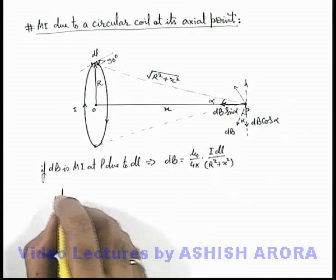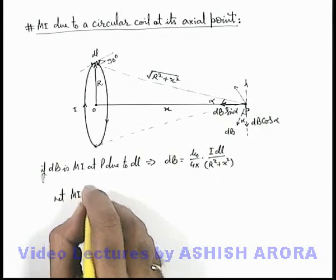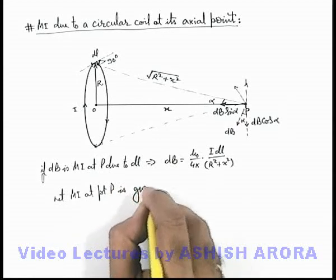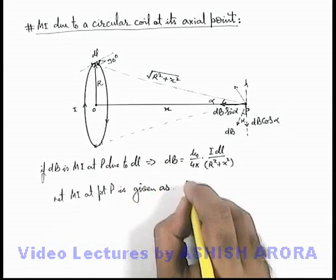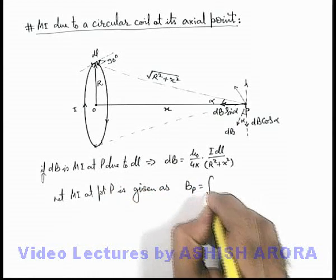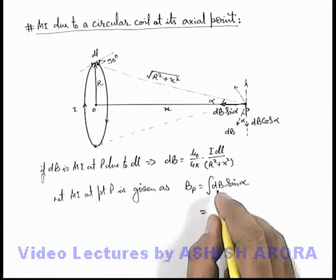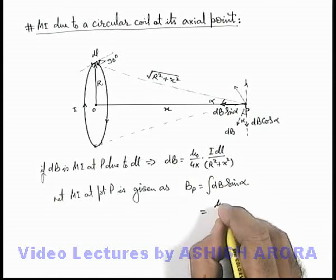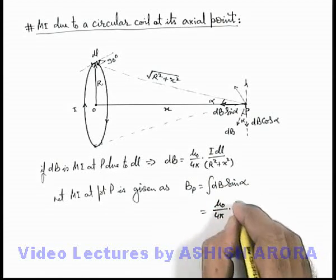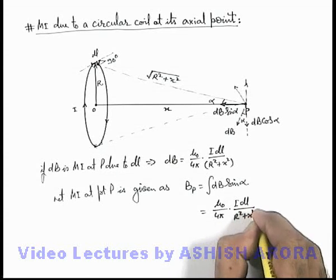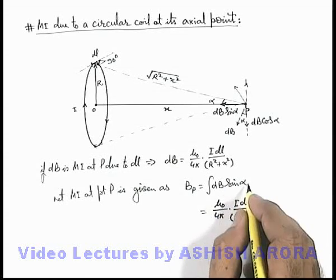So we can write net magnetic induction at point p as integration of db sine alpha. If we substitute the value, this db we can write as mu not upon 4 pi i dl upon r square plus x square multiplied by sine alpha.